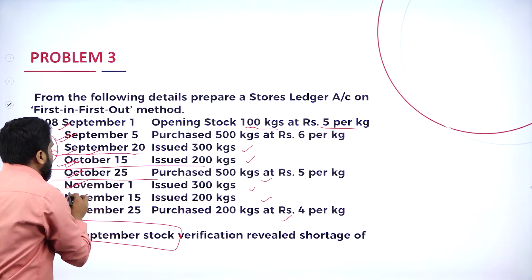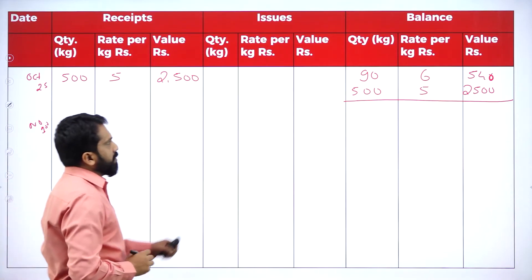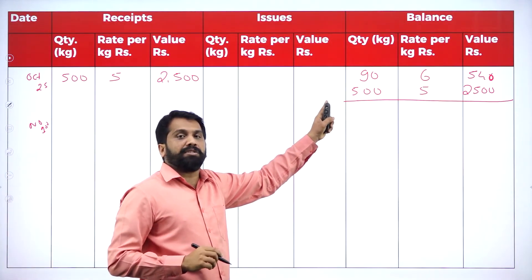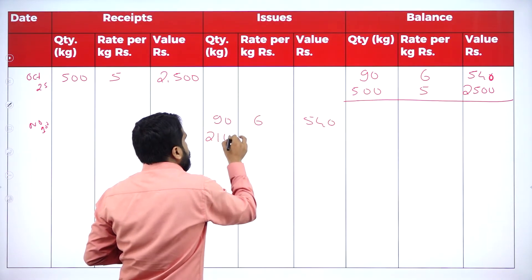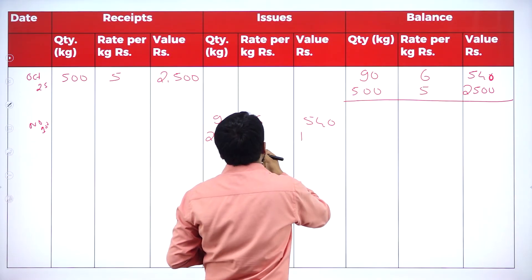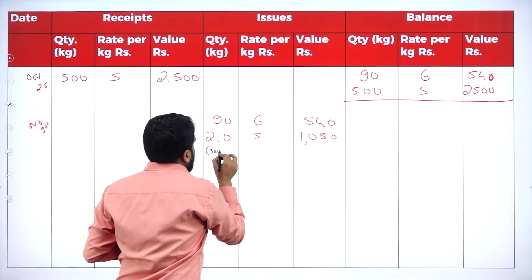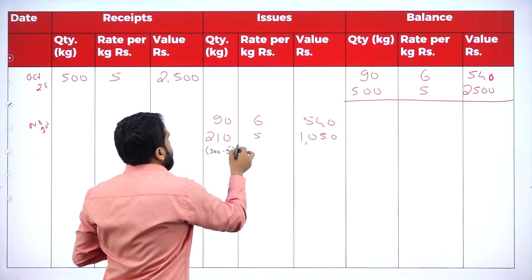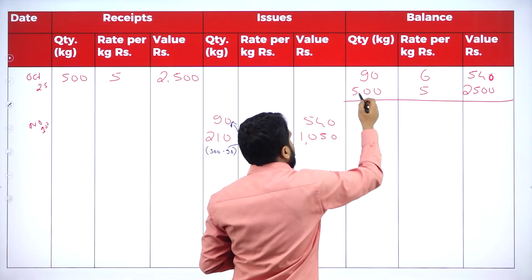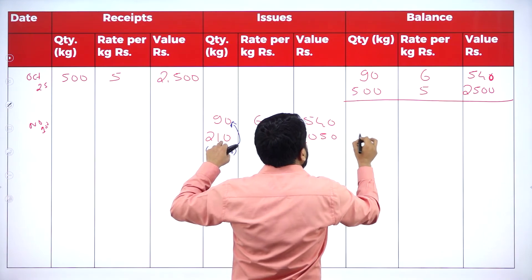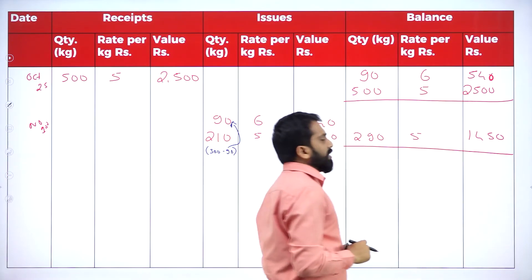November 1st: issue of 300 kgs. Can you issue from box number 1? Yes. Can you issue the complete 300 from box 1? No — box 1 has only 90 kgs. So take all 90 from box 1 at rupees 6, value 540. Remaining needed: 300 minus 90 equals 210 kgs, taken from box 2 at rupees 5, value 1050. Total issue: 300 kgs, value 1590. Balance: 290 kgs at rupees 5, value 1450.